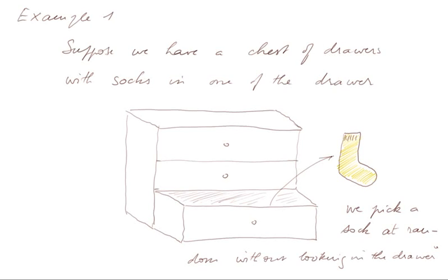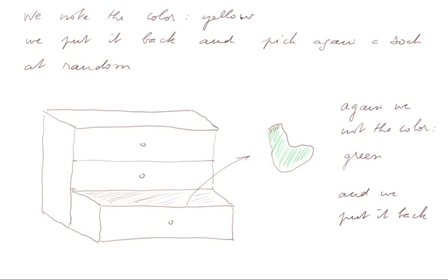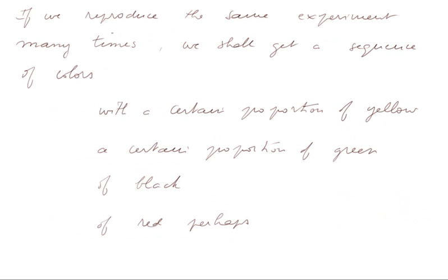We shall look at two examples. Example 1: Suppose we have a chest of drawers with socks in one of the drawers, the bottom drawer for instance. We pick a sock at random without looking into the drawer. Here is the sock that we picked — it's a yellow one. We note the color, yellow. We put it back and pick again a sock at random. Again we note the color — now it was green. And we put it back. If we reproduce the same experiment many times, we shall get a sequence of colors, with a certain proportion of yellow, a certain proportion of green, perhaps of black, red perhaps too.